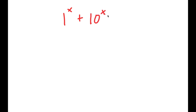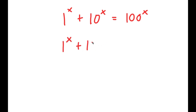In this video, I'm going to solve the equation 1 to the power of x plus 10 to the power of x is equal to 100 to the power of x. To solve this, I'm going to first start by rewriting this as 1 to the power of x plus 10 to the power of x is equal to 10 squared to the power of x.